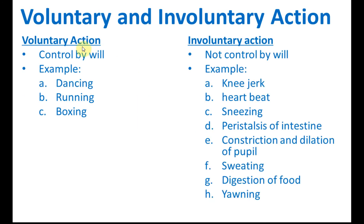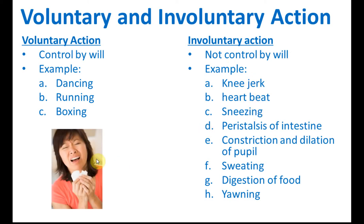Voluntary actions — controlled by will — examples: dancing, running, boxing. Involuntary actions — not controlled by will — examples: knee jerk, heartbeat, sneezing, and peristalsis of the intestine.